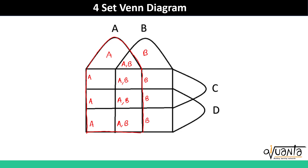Similarly for region C — C will be here, C will be here, and C will be present in all these boxes. I hope you can easily see it. So we are done with A, B, and C. Let us finally mark all the regions where D is present. D will be present here, D will be present here, here, here also, here also, in this region, this region and in this region.